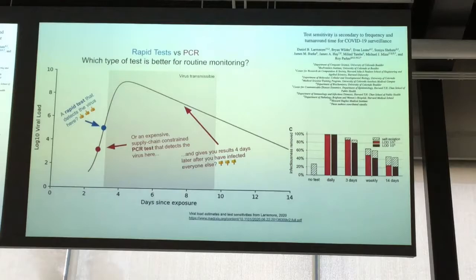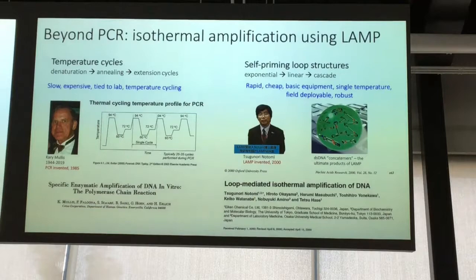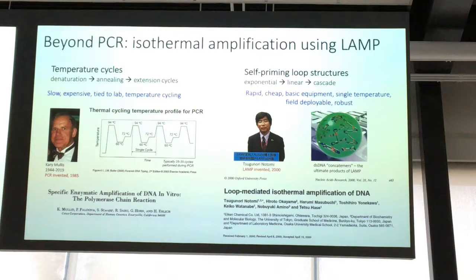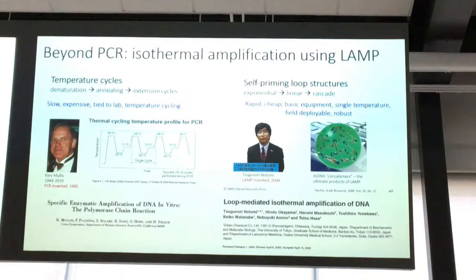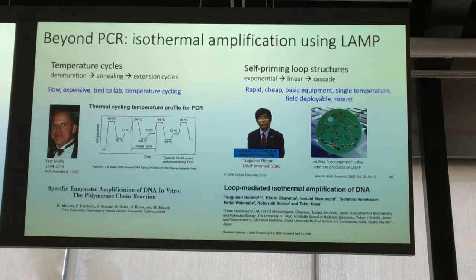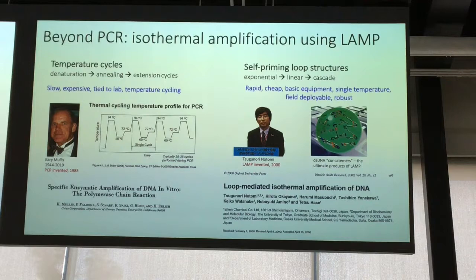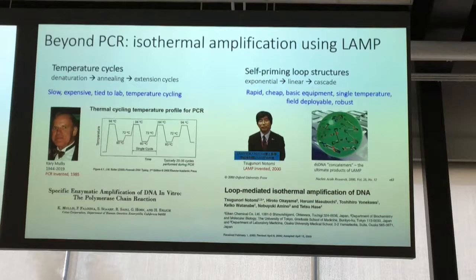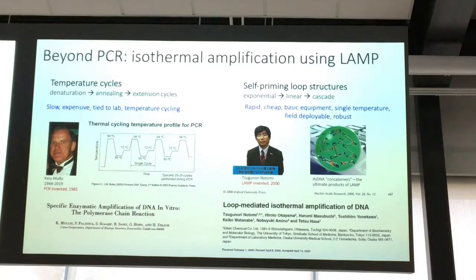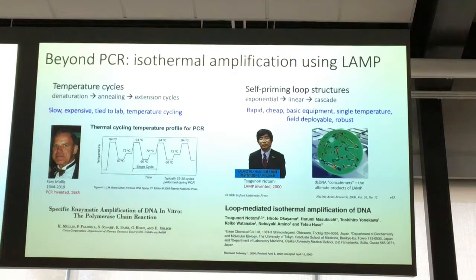In my lab, we're using a method called isothermal amplification called LAMP — Loop-Mediated Isothermal Amplification. qPCR was invented in 1985 — it's slow, expensive, requires a $50,000 instrument, and requires temperature cycling. LAMP was invented in 2000 by a Japanese group. It rapidly amplifies RNA to make DNA using six different primers. It's very fast, very cheap — each assay is about a dollar. Isothermal means you hold the temperature constant, so all you need is a heat source: an oven, a sous vide machine, or just hot water held at 65 degrees for half an hour.